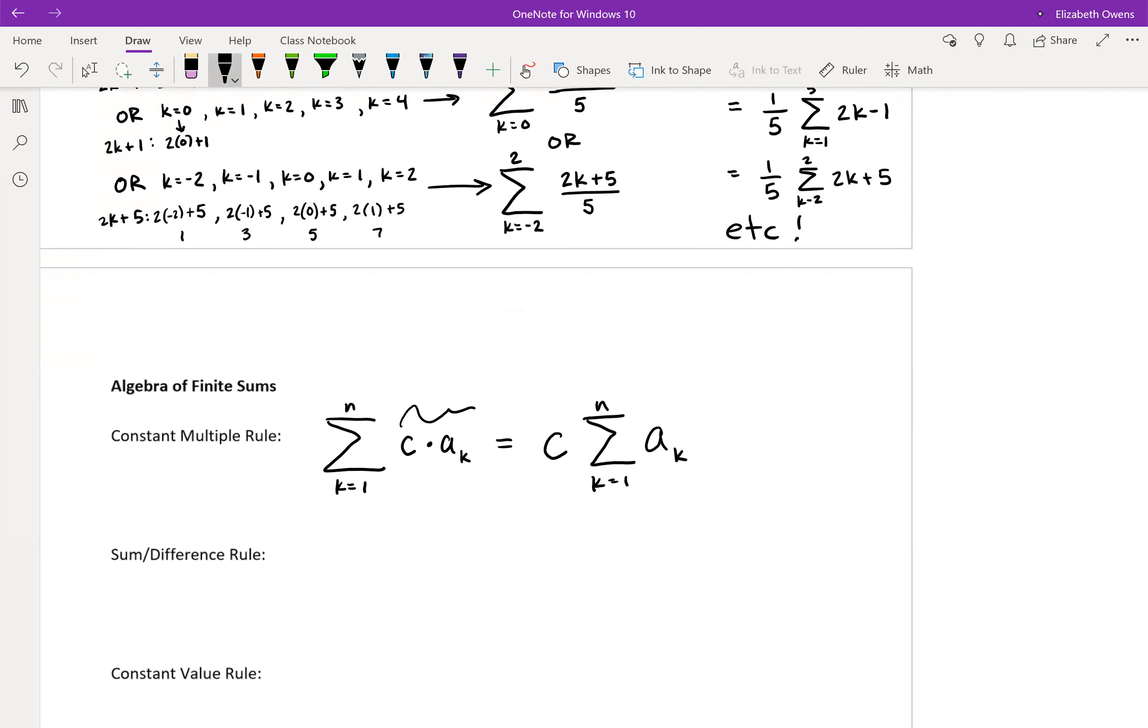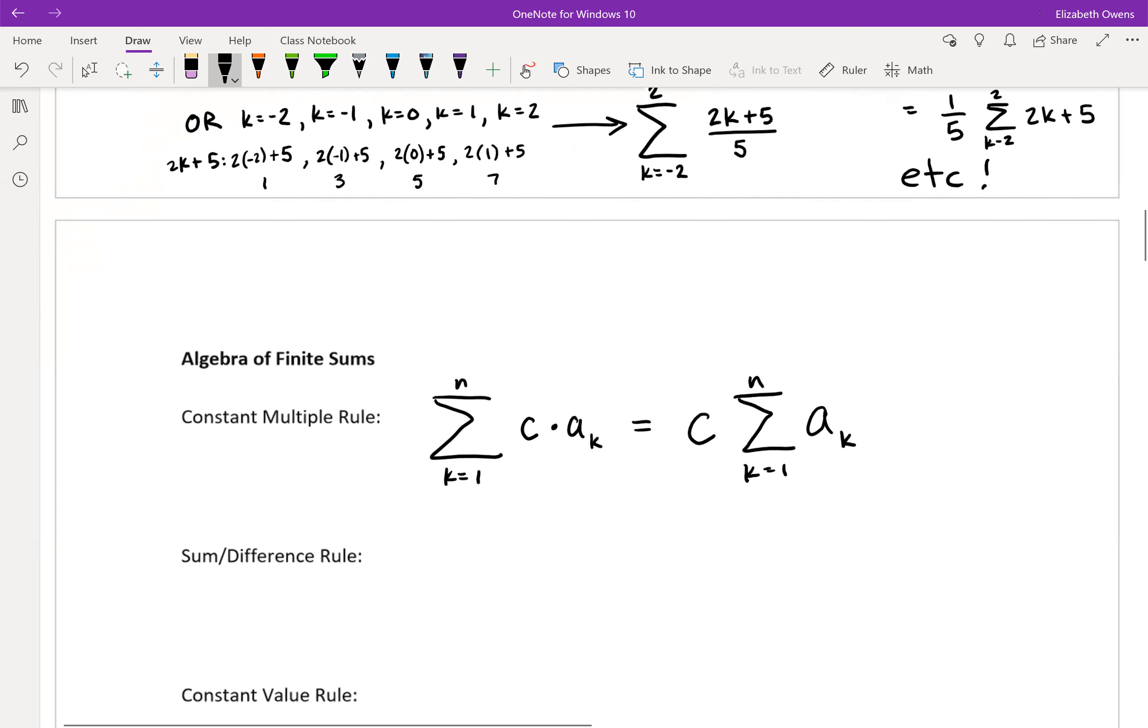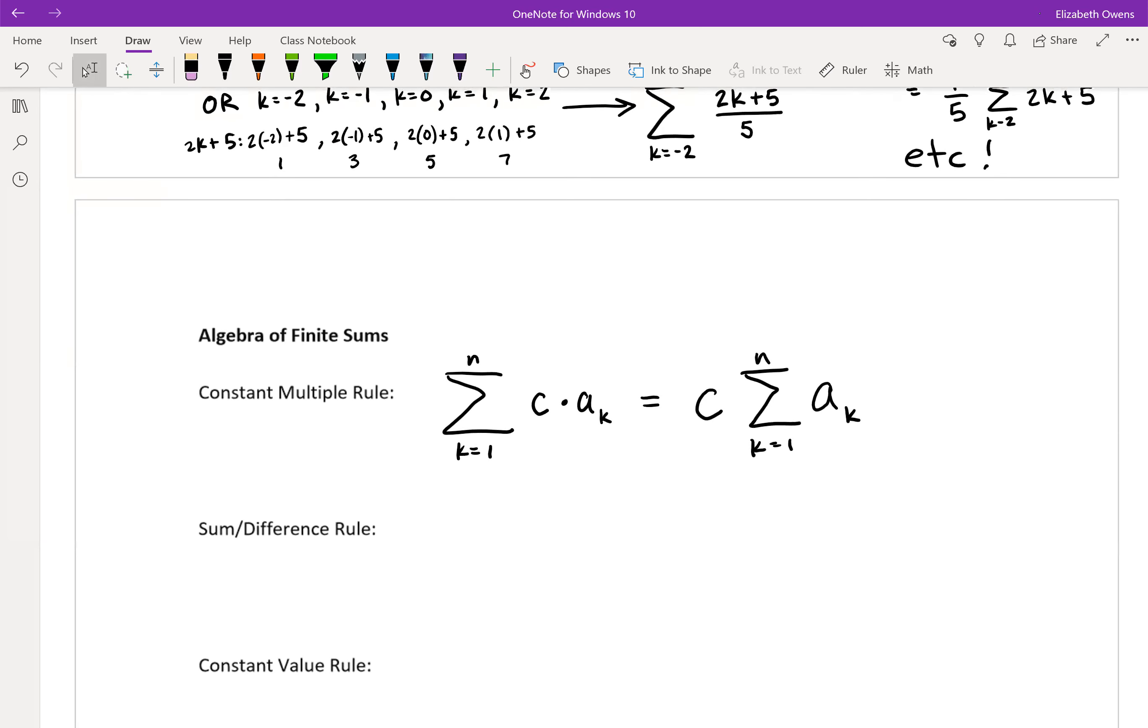If you have c times any formula a sub k, you can pull that constant c out front. So that's kind of a nice little trick to have up your sleeve.